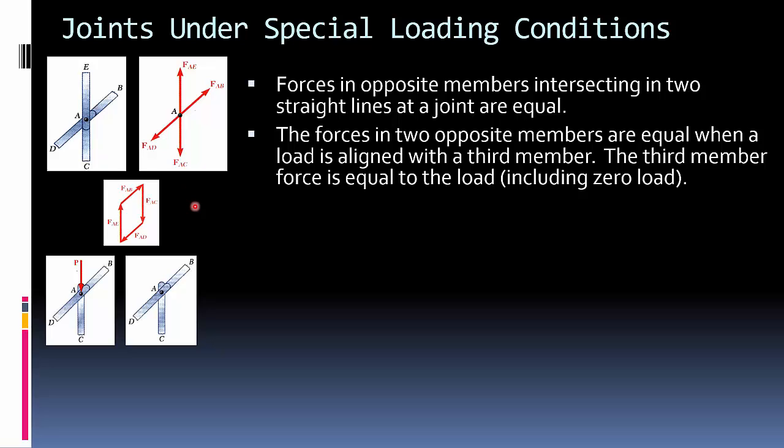It's saying that the forces in two opposite members are equal when a load is aligned with the third member. So we have this member here, there's this load aligned with the third member. And the third member force is equal to the load. And so in this case, where there's no load, it means that this member, the force in this member is zero, and the members in AD and AB are going to be identical.